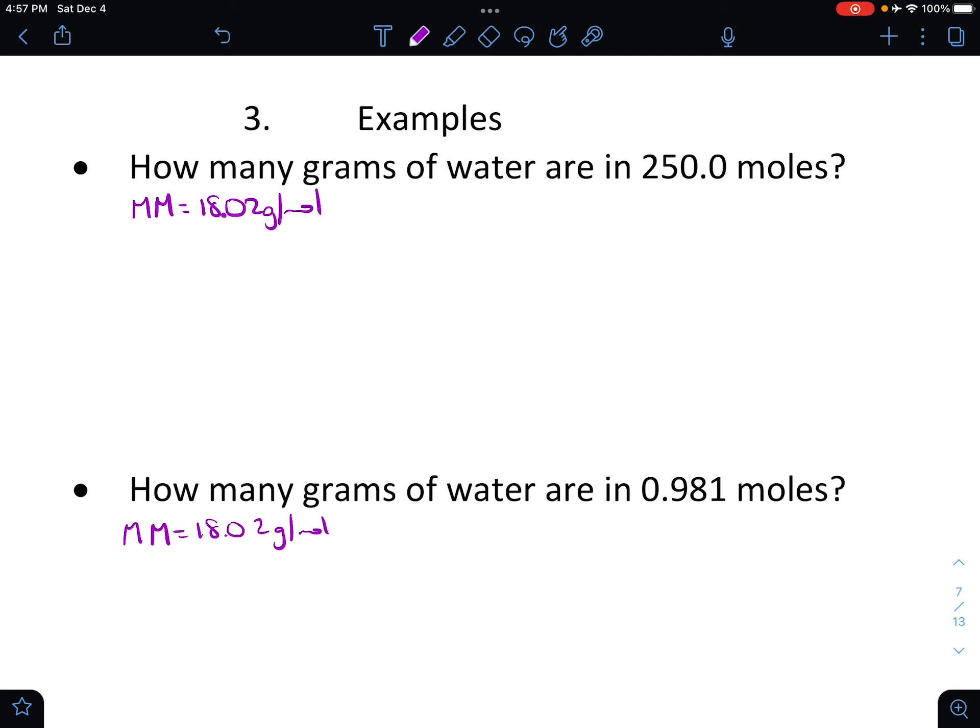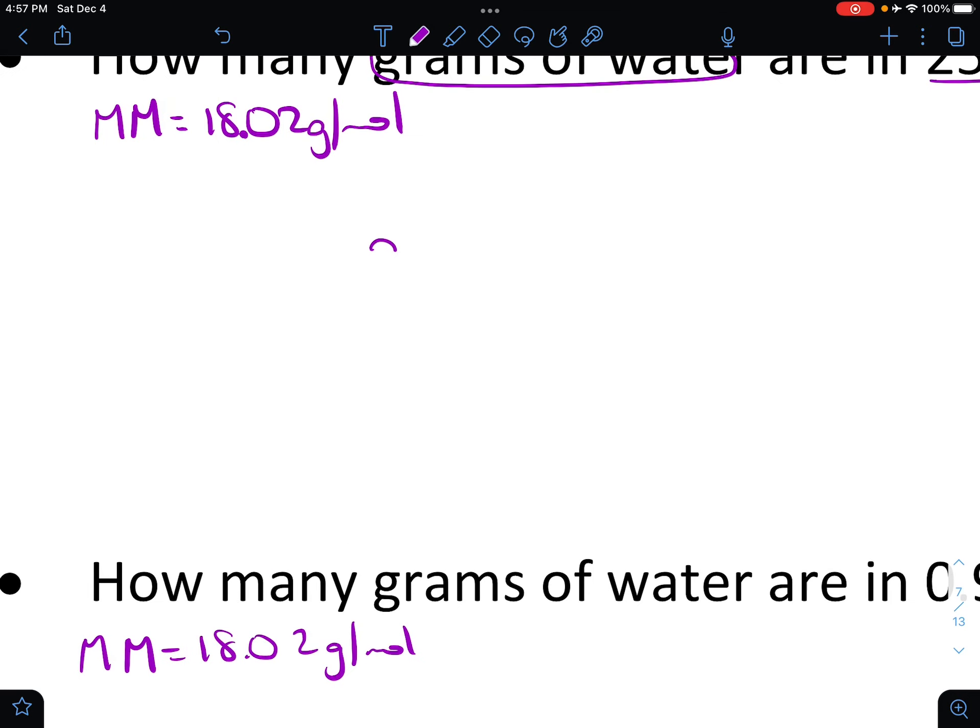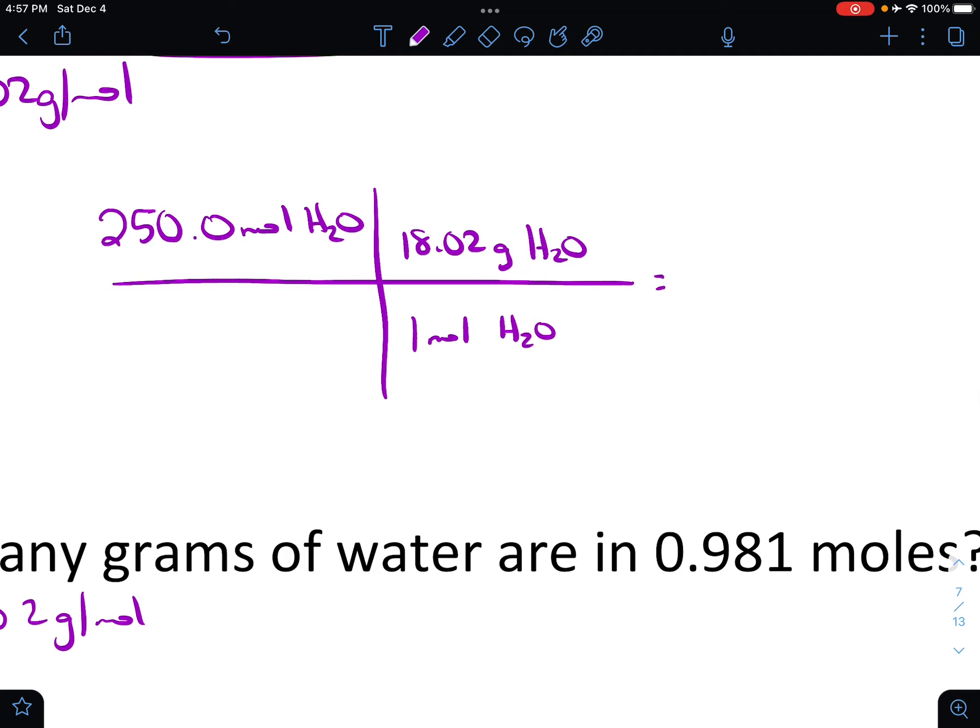Here we go. We're looking for grams of water, and we know we have 250 moles. So using our unit analysis or dimensional analysis skills that we learned earlier this year, we're going to start our little T-chart right here. 250 moles, and we have that many moles of water. And we know that one mole of water equals 18.02 grams of H2O.